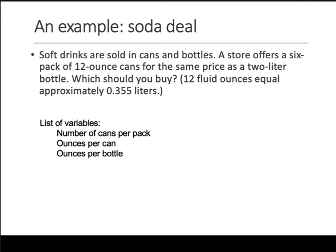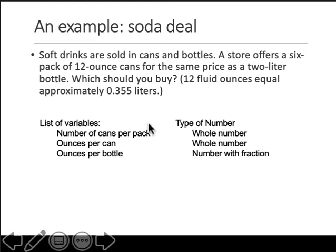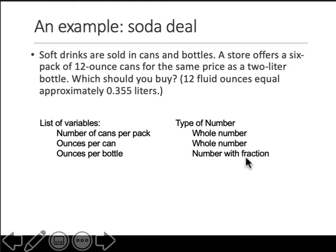First name cannot be 44.3 — that's a different thing. In this case, number of cans: you cannot have decimal cans in a pack, so that's a whole number. Ounces in a can is given as 12, not 12.0, so that's a whole number as well. But ounces in a bottle is likely to be a decimal, because when you convert 12 fluid ounces to liters and multiply for a two-liter bottle, you may end up with a fractional number.